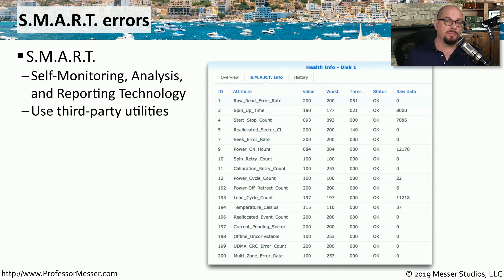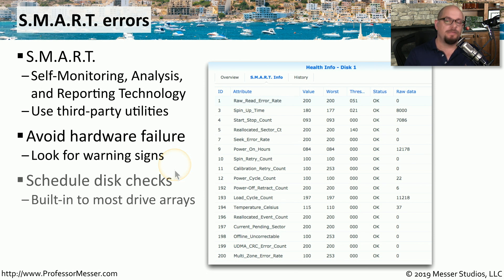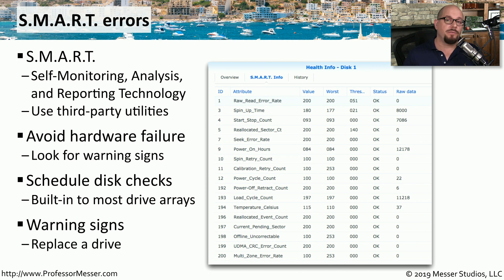Many drives will tell you when problems start to occur using a technology called SMART — Self-Monitoring, Analysis, and Reporting Technology. These SMART metrics are calculated inside every drive, and there are a number of different attributes being gathered. Various third-party utilities and built-in OS tools allow you to view these SMART errors, so you might be able to see spikes or changes in drive operation and replace the drive before losing any data. If these drives are in a drive array, there are usually scheduled disk checks every month and constant monitoring of SMART statistics, allowing system administrators to get proactive information about when a drive may be going bad and schedule a replacement without any user downtime.